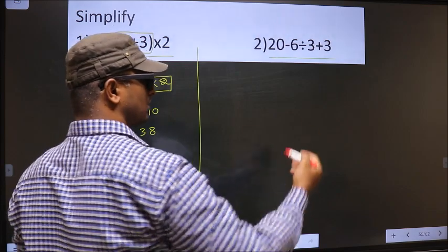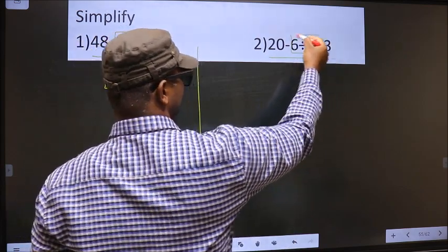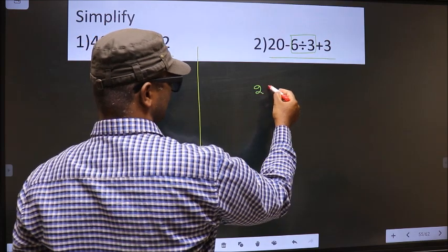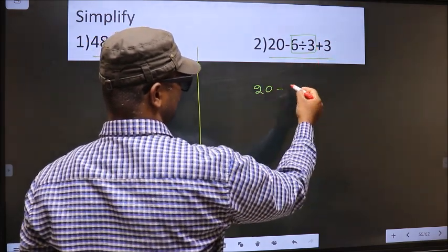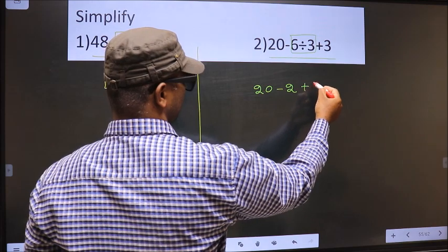So as per the rule, we should do division first. So we get 20 minus 6 divided by 3 is 2 plus 3.